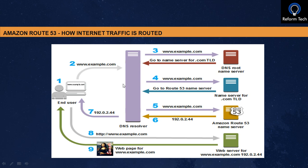The DNS resolver is your Internet Service Provider — such as a cable network, broadband provider, or corporate network. The DNS resolver forwards your request to the DNS root name server. The DNS root name server then tells the resolver to reach out to the TLD (Top Level Domain) name server. The DNS resolver sends the request to the name server for the .com TLD, which responds with four Route 53 name servers.